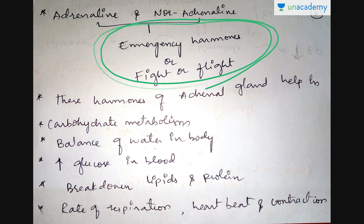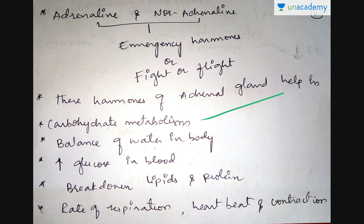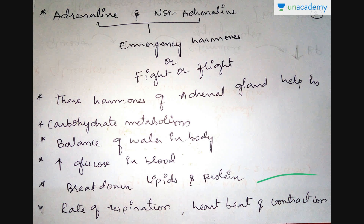These hormones of the adrenal gland help in carbohydrate metabolism, balance of water in our body, increasing glucose in blood, breakdown of lipids and proteins, and also help in the rate of respiration, heartbeat, and contraction of the heart.